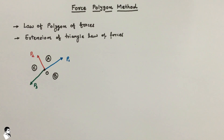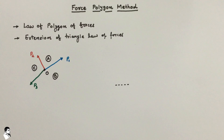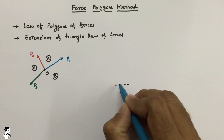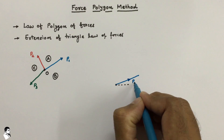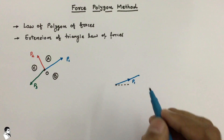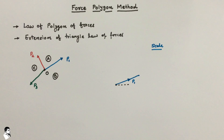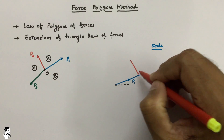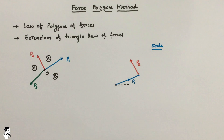To draw the polygon, we fix a base as the starting point and consider the first force P1, drawing it while maintaining the direction of P1 with magnitude to a proper scale. After that, we take the second force P2, again maintaining its magnitude to scale and the direction of P2.